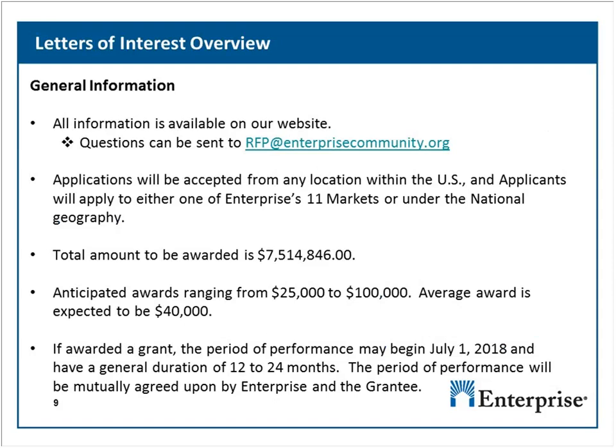The total amount we will be awarding through this LOI is about $7.5 million, with awards anticipated to range between $25,000 and $100,000, and an average award amount of about $40,000. If you are awarded a grant, the period of performance may begin as early as July 1st with a duration of 12 to 24 months, mutually agreed upon by Enterprise and the grantee. Keep in mind that grant agreements will not be issued until September.